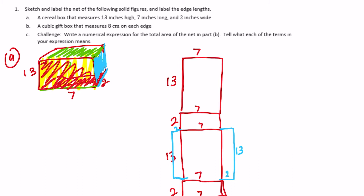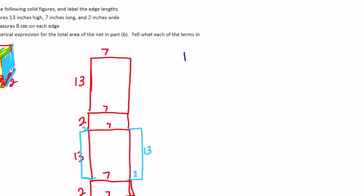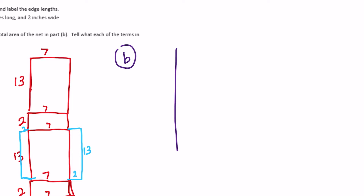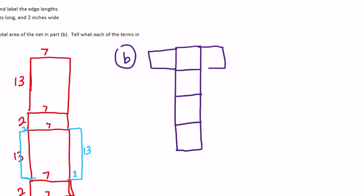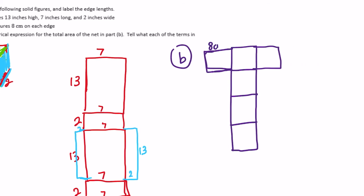Part b: a cubic gift box that measures 8 centimeters on each side, so we're just going to draw the net of a cube. There are about 10 or 12 different choices, but I always think of the one that is shaped like a T. All of these are squares and every side is 8 centimeters.